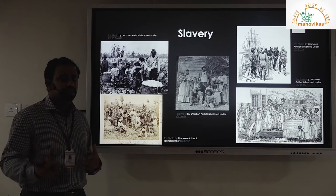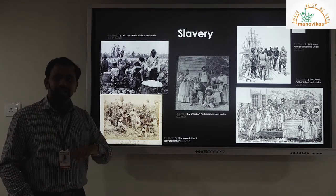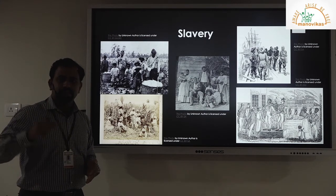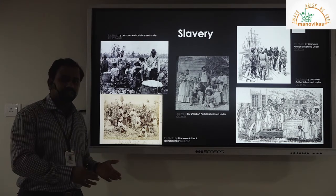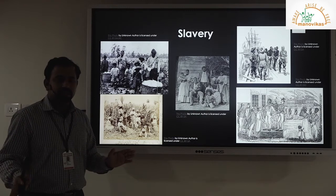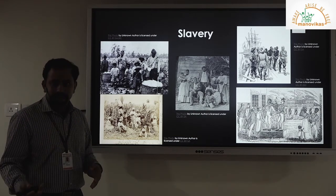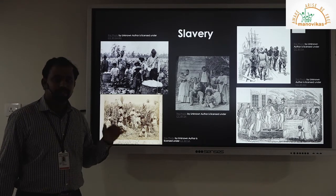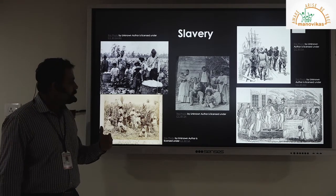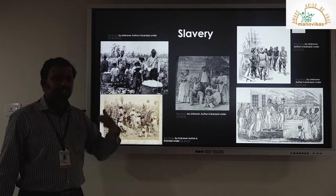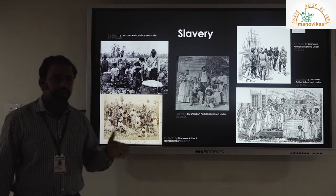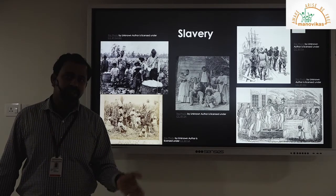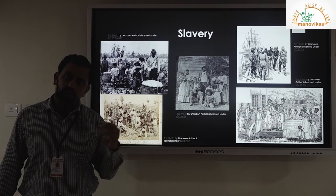But when we speak about European-style slavery, it was a different style. In earlier forms of slavery, it was not meant to last for generations and generations. It was like one person was captured and was a slave, but his next generation probably wouldn't be a slave. But when we speak about slavery in South and North America, it was generational — if a person was a slave and had an offspring, that offspring would also be a slave.